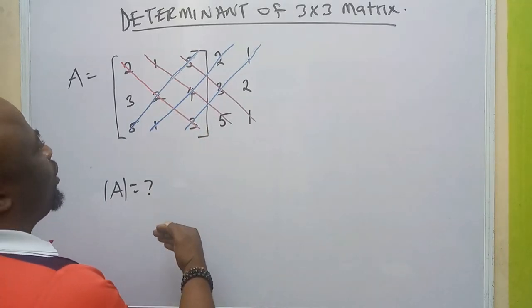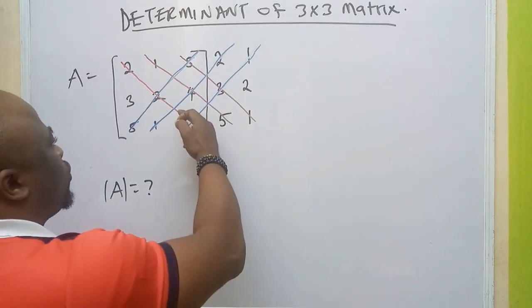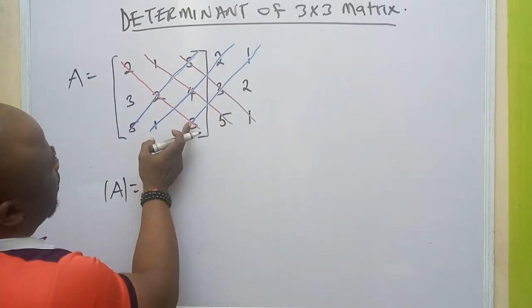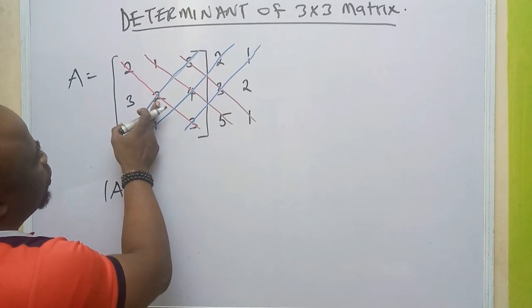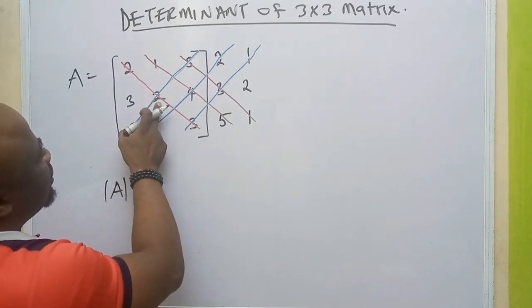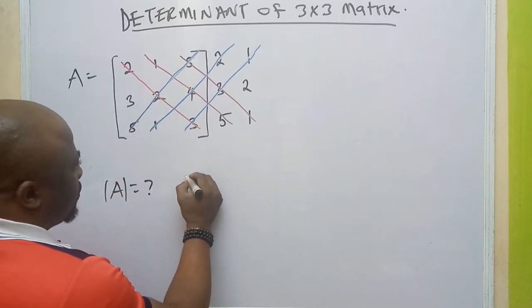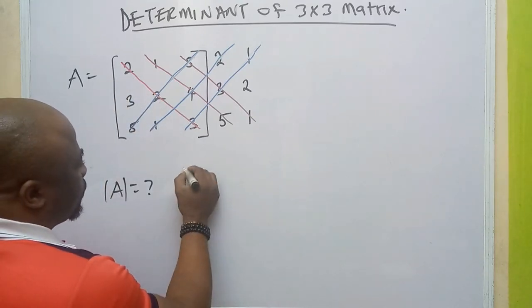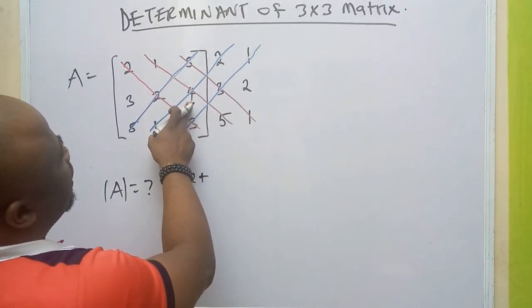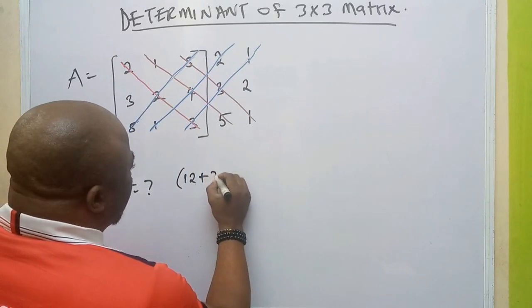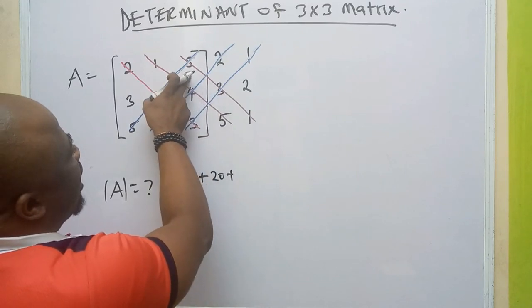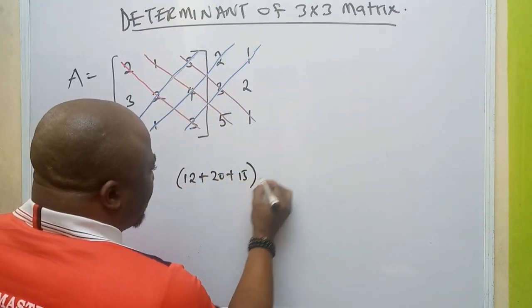We are going to multiply the diagonal elements together. Starting with the first positive diagonal: 3 times 2 is 6, times 2 is 12. Plus the second: 5 times 4 is 20, times 1 is 20. Plus the third: 1 times 3 is 3, times 5 is 15. So the positive part gives us 12 plus 20 plus 15.